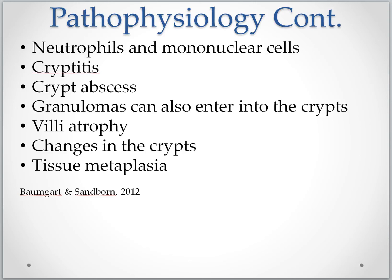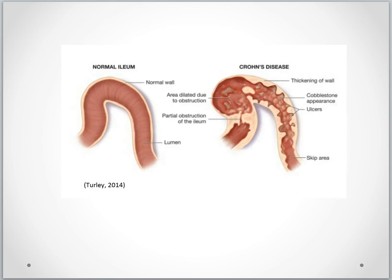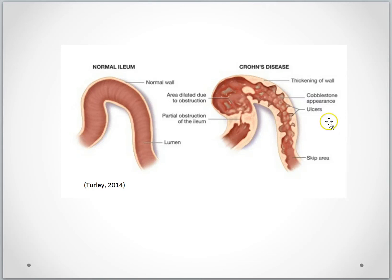I want to end this presentation with a couple of images showing some of the changes that occur in Crohn's disease pathophysiology. The first image shows a comparison of normal ileum with a Crohn's diseased ileum. As you can see, it contains what's called cobblestone appearance, which is a hallmark sign of Crohn's disease. This cobblestone appearance is from the fissures and ulcers, which form separate islands of mucosa. You can also see a thickening of the wall and an area depicting an obstruction due to scar tissue formation and intestinal wall thickening.